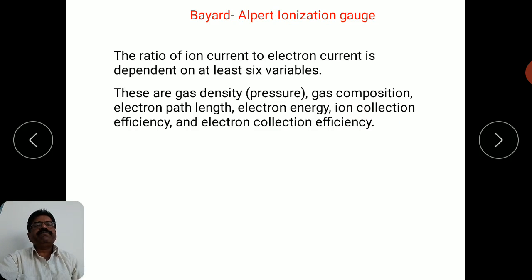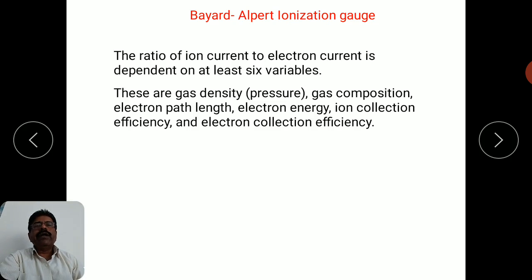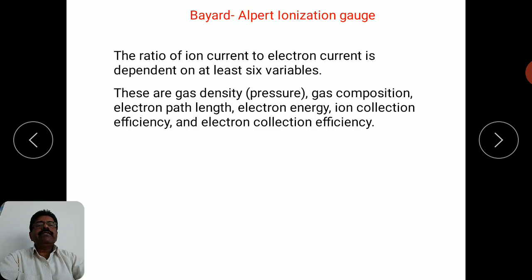Gas composition determines the ionization potential of the gas species. Different gas molecules have different ionization potentials. If the ionization potential is very large for the gas species present inside the chamber and the electron energy is less, there will be no ionization, and this ratio of ionic current to electron current will be affected.